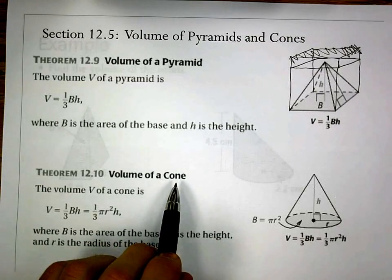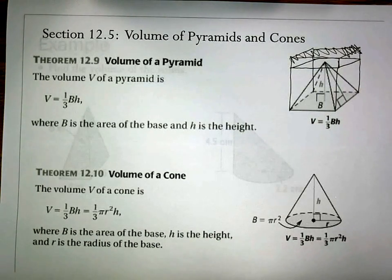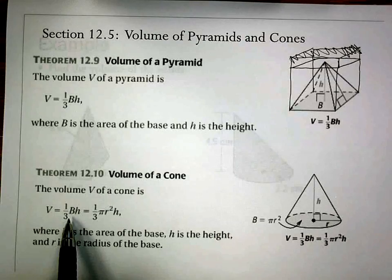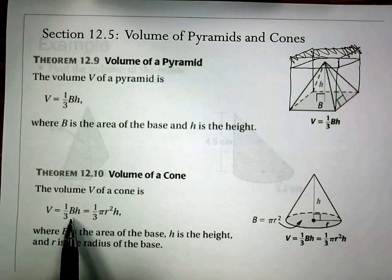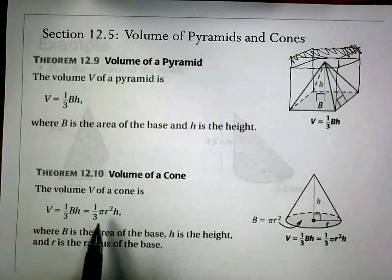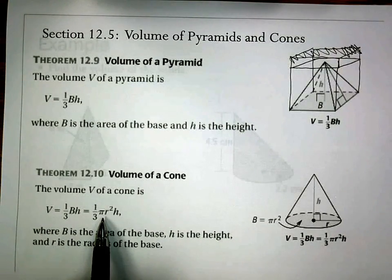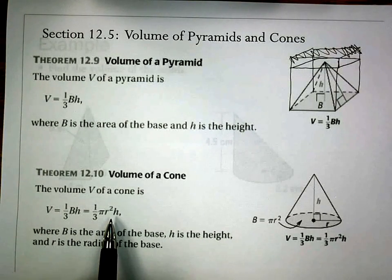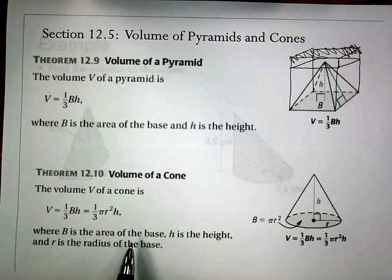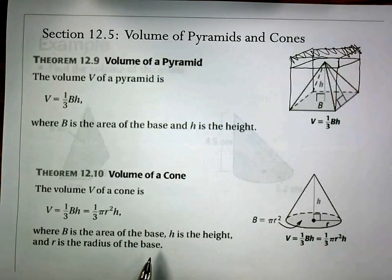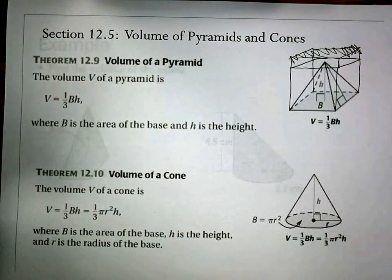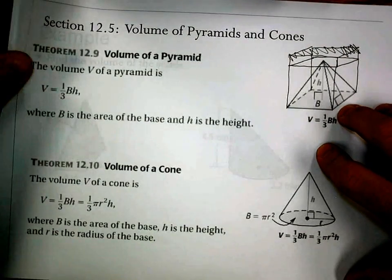For the volume of a cone, which is our circular version of a pyramid with the circle as the base, we start off with the same one-third the base area times the height. But we can change that base area because it's a circle to be π r². One-third π r² times the height. Where B is the area of the base, h is the height, and r is the radius of the base. These are the two formulas we're going to work with to find our volumes.